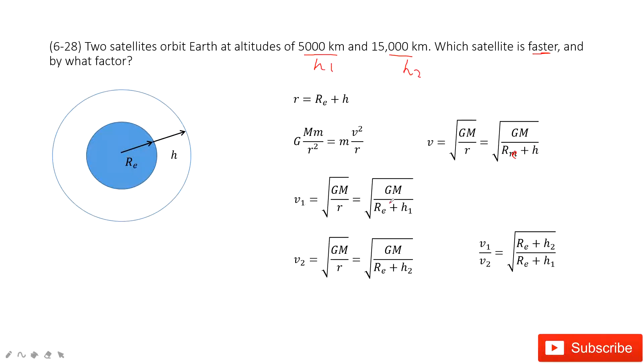Now we need to compare these two velocities. So v1 equals this one, v2 equals this term. And then we need to find this ratio. By what factor? So the ratio v1 divided by v2 equals this equation. In this equation, the radius of the earth is given, and these two distances above the earth, h1 and h2, are also given.